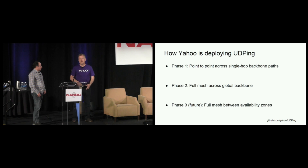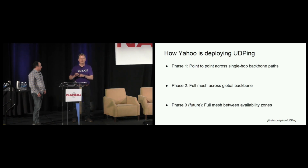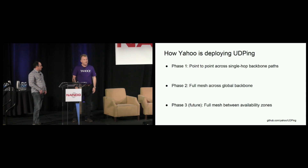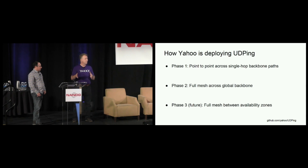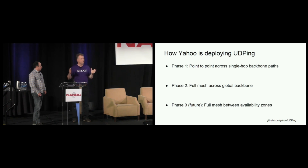We started with a point-to-point deployment — putting an agent in every PoP on our backbone and measuring single-hop latency and packet loss across all of them. The next step was to deploy a full mesh across our backbone, so every single PoP and site has an agent doing a full mesh to every other PoP and site. We can then draw a nice grid, which on a good day is all green, and look at the performance of our backbone as a whole.